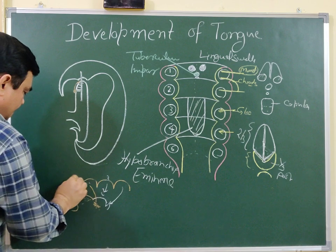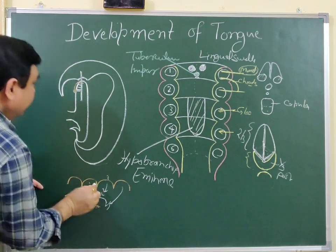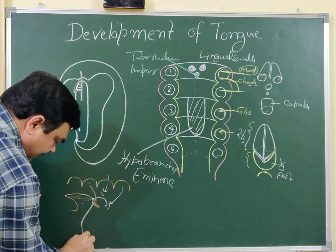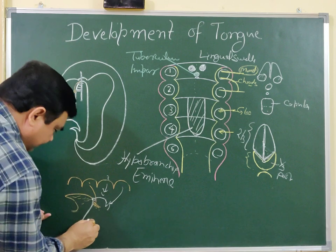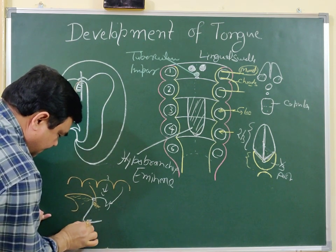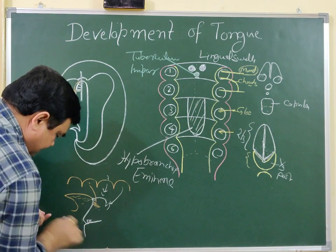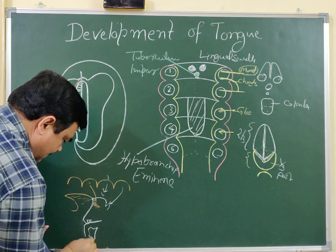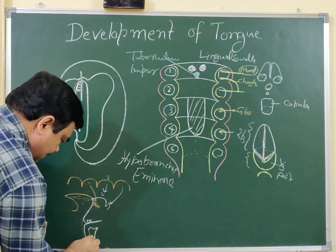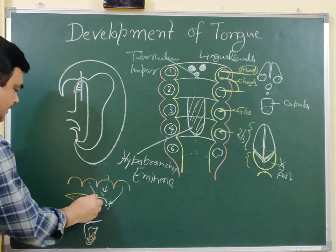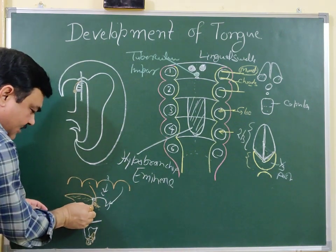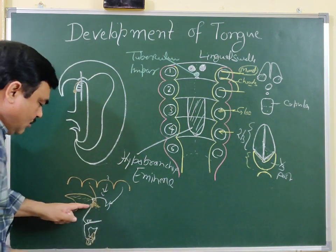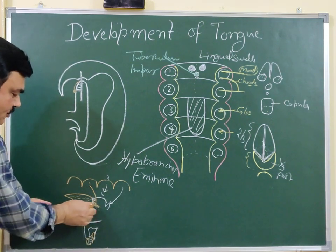The thyroglossal duct descends from the foramen cecum and forms the thyroid gland. Sometimes a remnant of the thyroglossal duct persists on the tongue — that is known as lingual thyroid. If thyroid tissue persists here, it is known as lingual thyroid.